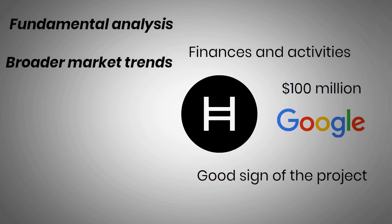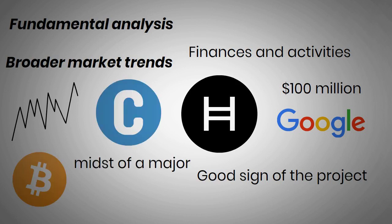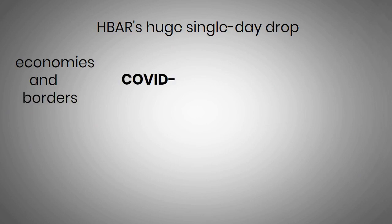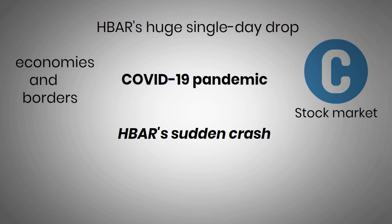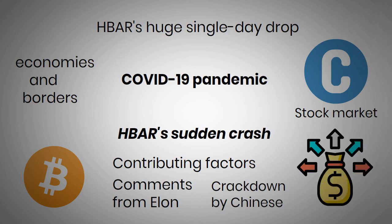Broader market trends have also played a role in HBAR's price history. Its surge at the start of 2021 wasn't unique, and the entire crypto market pumped around this time. Bitcoin was in the midst of a major bull run, and with such strong market dominance, any significant price movement for Bitcoin often impacts other cryptocurrencies. HBAR's huge single-day drop in March 2020 came as economies and borders were closing down around the world in response to the COVID-19 pandemic, which was felt by the whole cryptocurrency sector and the entire stock market, which experienced the biggest single-day crash since 1987. HBAR's sudden crash in May 2021 was also market-wide, with contributing factors including comments from Elon Musk, a crackdown by Chinese authorities, liquidations, and a healthy market correction.